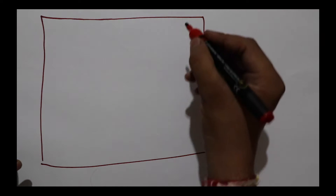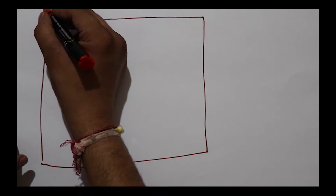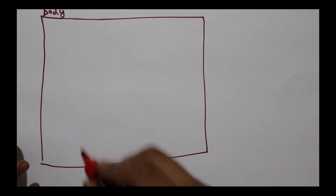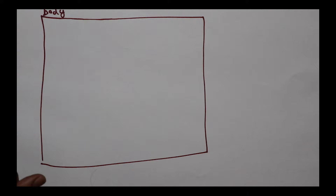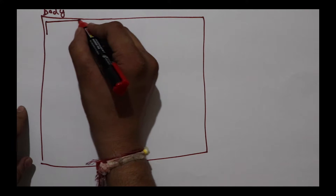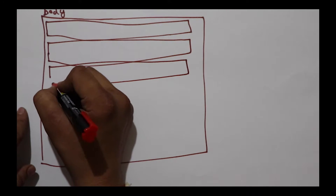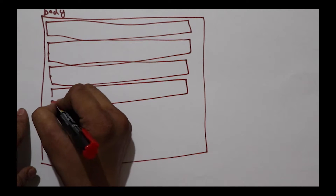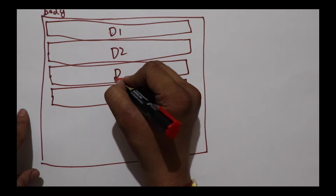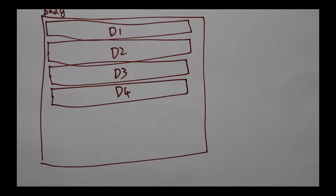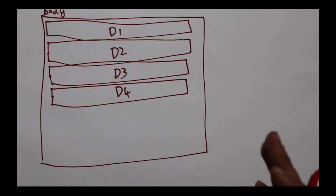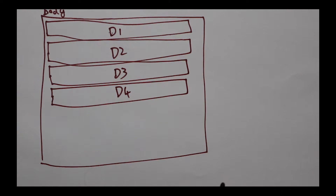This is a simple HTML page. Let's assume this is our body tag. Inside the body tag, if I add four consecutive divs without any CSS styling, those divs would appear something like this — div 1, div 2, div 3, and div 4. This is a block element; it occupies the entire space of the page, whatever width is available to it.